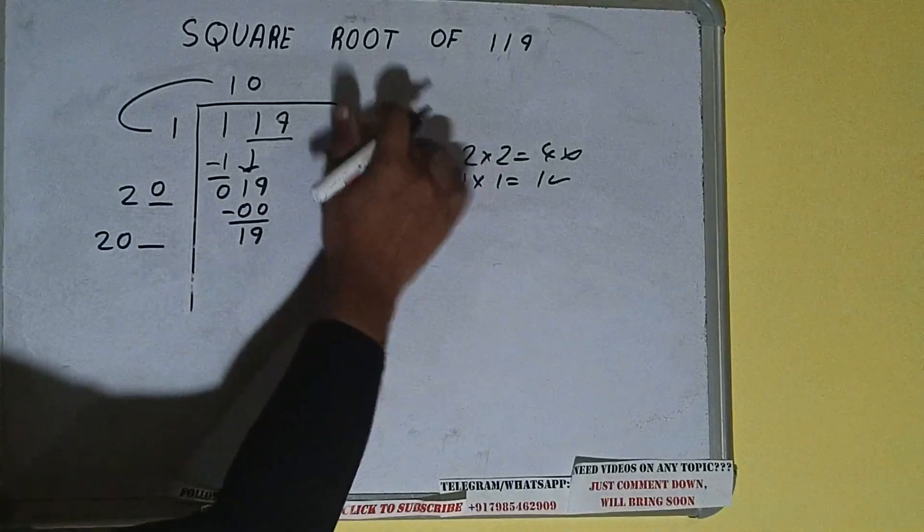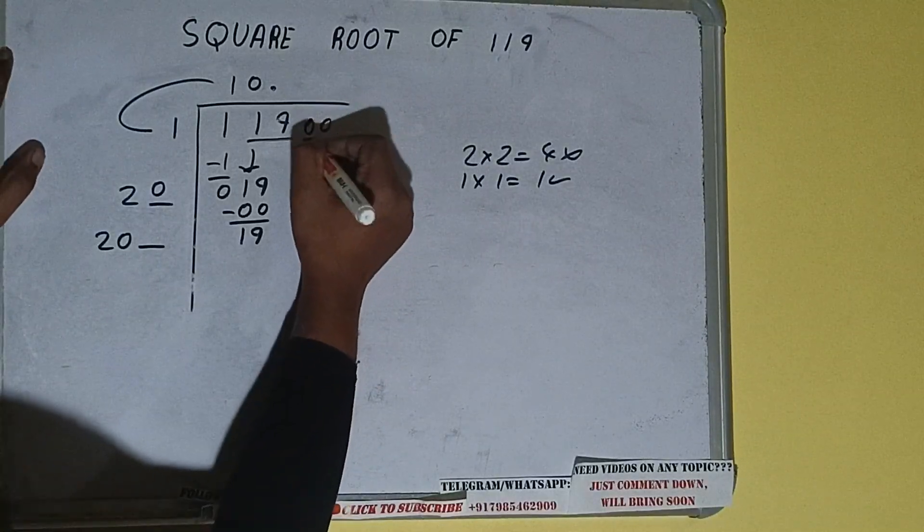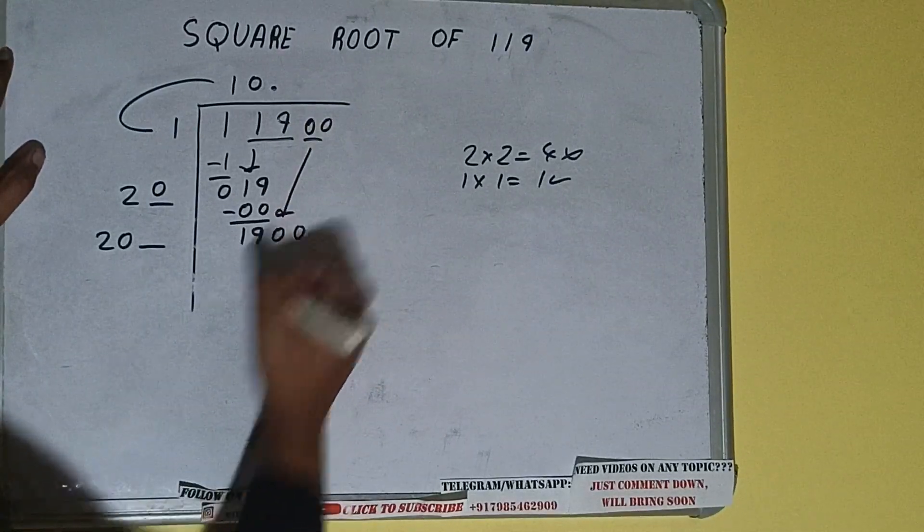But we don't have more pair, so we'll put decimal. Once I put decimal we can bring pair of zeros down, and it will be 1900.